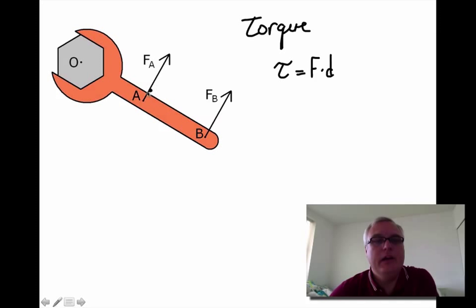The amount of force you apply will increase the torque, but also the distance away from the point of rotation. In this diagram, this object will rotate around this point. Force A is this far away from the point of rotation while force B is much further away.